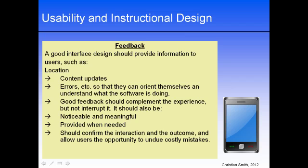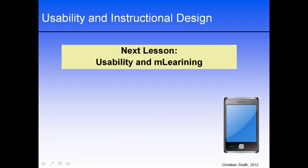In a nutshell, feedback is anything that the software interface provides that lets the user know that their interaction has done something. That concludes our introductory lesson to usability. Remember that the application of these five principles — consistency, perceivability, learnability, predictability, and feedback — will drastically increase and improve the user experience. In our next lesson, we will be looking at how usability relates to mobile learning.